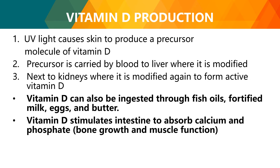Vitamin D production: UV light causes the skin to produce a precursor molecule for vitamin D. The precursor is carried by the blood to the liver where it is modified, then to the kidneys where it is modified again to form active vitamin D. Vitamin D can also be ingested through fish oils, fortified milk, eggs, and butter. Vitamin D stimulates the intestine to absorb calcium and phosphate for bone growth and muscle function.